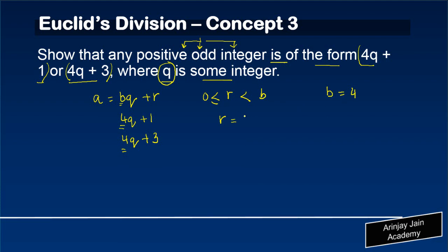Because r is greater than or equal to 0, it could be 0, 1, 2, and 3, for the simple reason that it is less than b. If it is less than b, then it has to be less than 4, so 0, 1, 2, 3 could be the possible values of r.